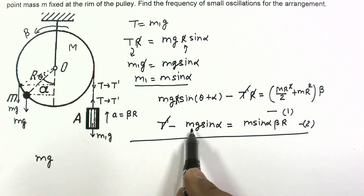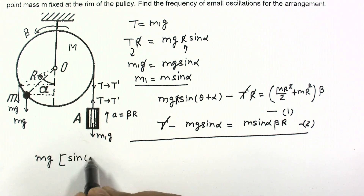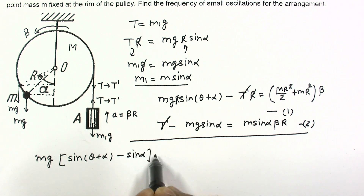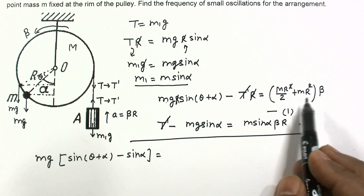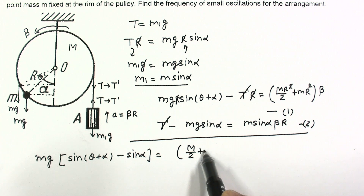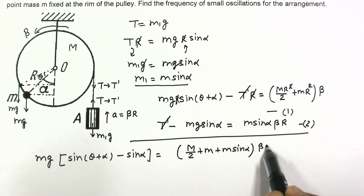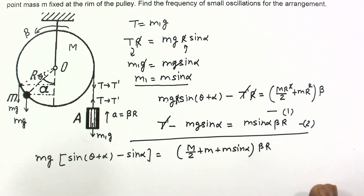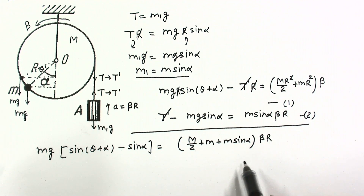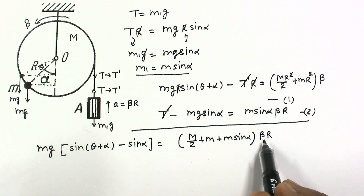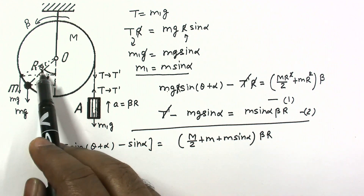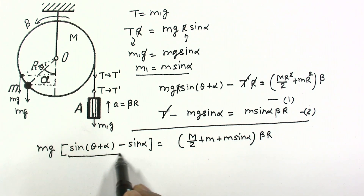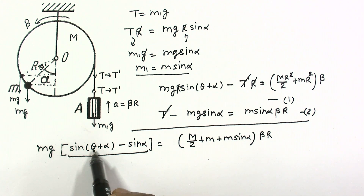On adding equations one and two, Mg can be taken as common, giving Mg·[sin(θ + α) − sin α]. This equals, with R and β common on the right side: [M/2 + m + M sin α] · β · R. We now apply the trigonometric identity: sin C − sin D = 2 cos((C+D)/2) · sin((C−D)/2).